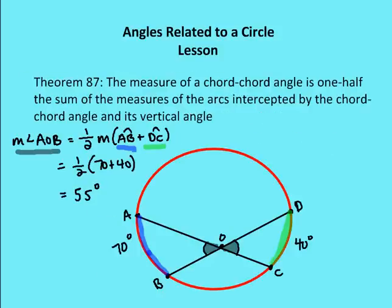Theorem 87 tells us that the measure of a chord-chord angle — in this case either angle AOB or angle DOC — is going to be equal to one-half the measure of the sum of the intercepted arcs. So one-half of arc AB plus arc DC equals the measure of angle AOB. The measure of angle AOB is one-half of 70 plus 40, which equals 55 degrees. I also know that the measure of angle DOC is 55 degrees because DOC is a vertical angle to angle AOB.